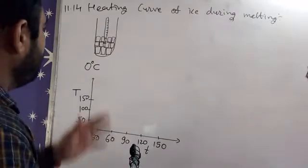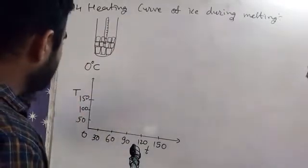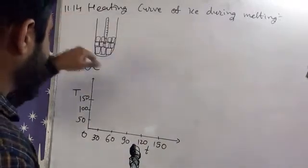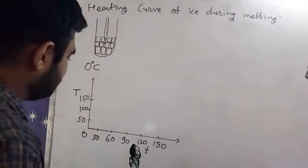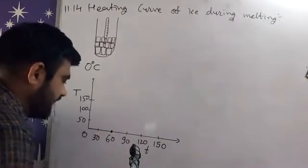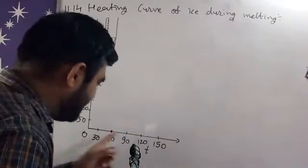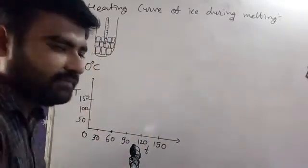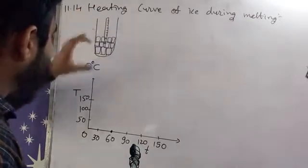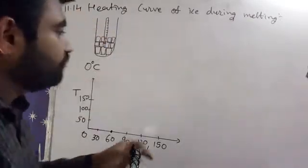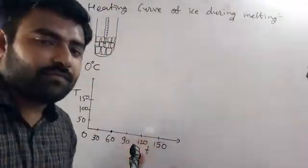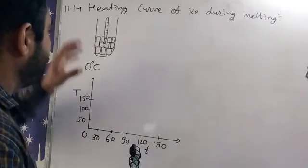Now, if I am giving heat energy by heating this test tube, what happens here? Up to a certain time limit, our graph is parallel with the time axis because until this ice cube is melting down, temperature remains constant.